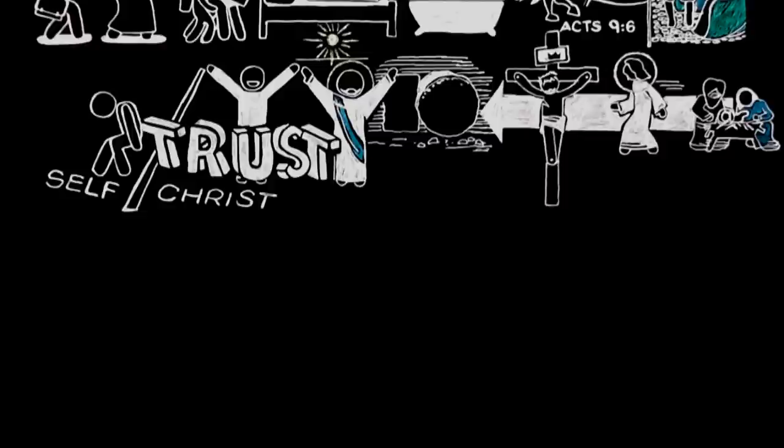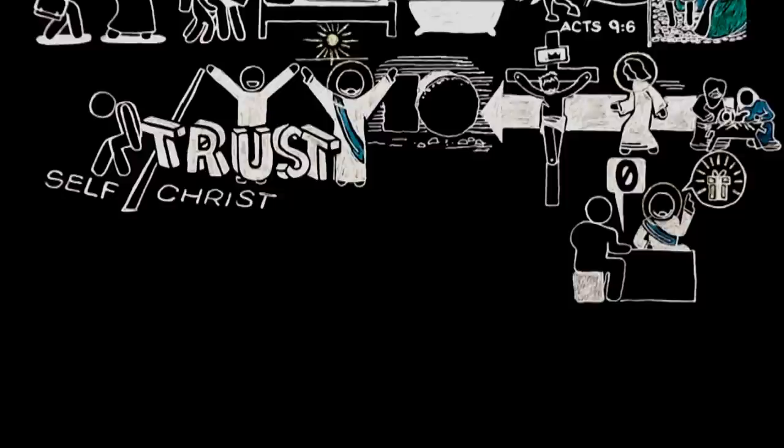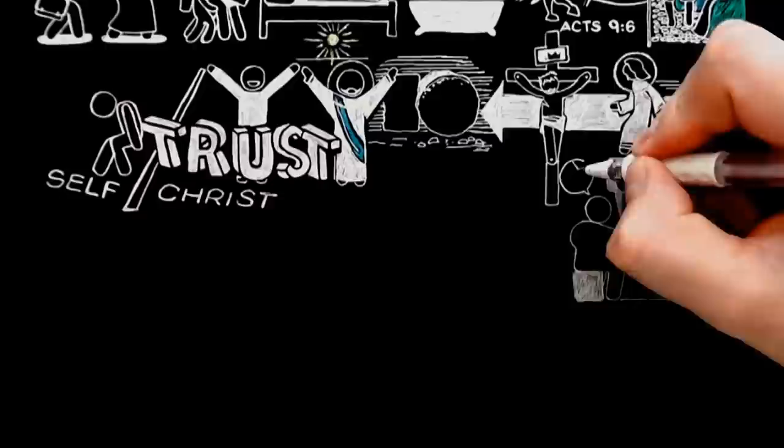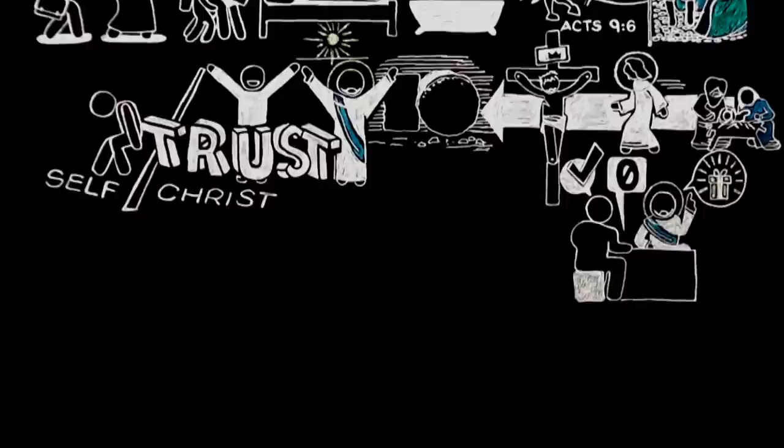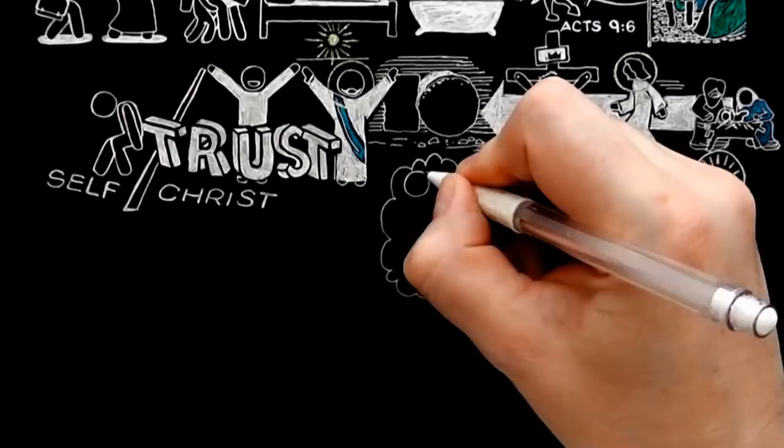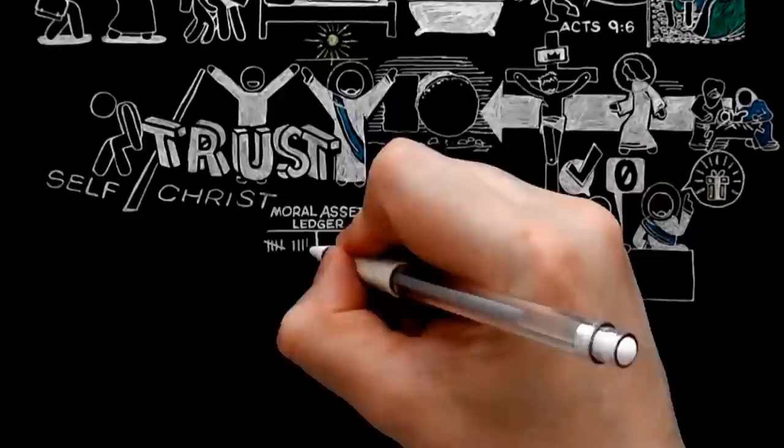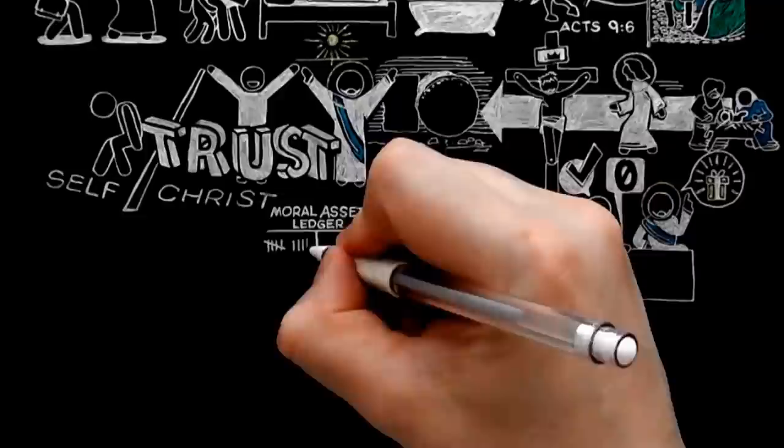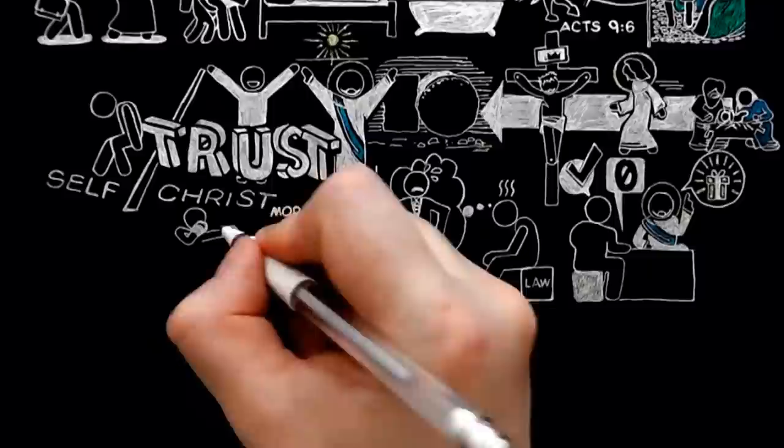If you like to put it that way, Christ offers something for nothing. He even offers everything for nothing. In a sense, the whole Christian life consists in accepting that very remarkable offer. But the difficulty is to reach the point of recognizing that all we have done and can do is nothing. What we should have liked would be for God to count our good points and ignore our bad ones. Again, in a sense, you may say that no temptation is ever overcome until we stop trying to overcome it, throw up the sponge.